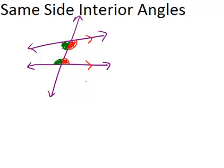It goes both ways. If two lines are parallel, then the same side interior angles will have to be supplementary. And also the other way around, if two same side interior angles are supplementary, then the lines have to be parallel.